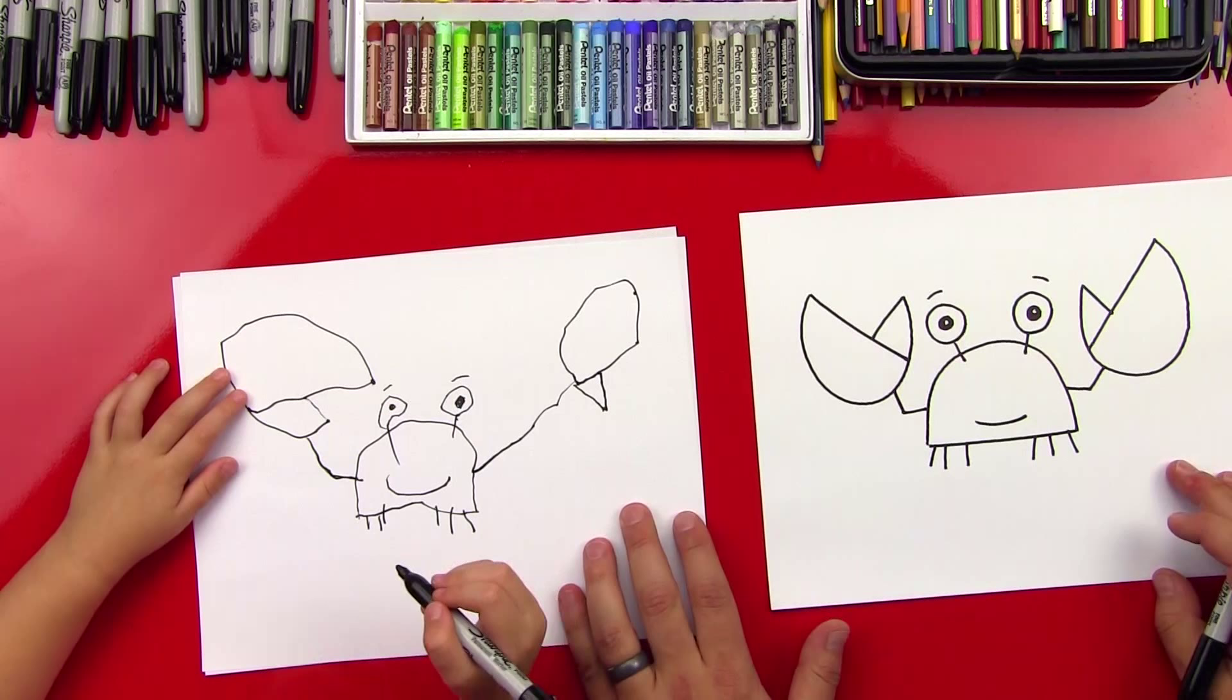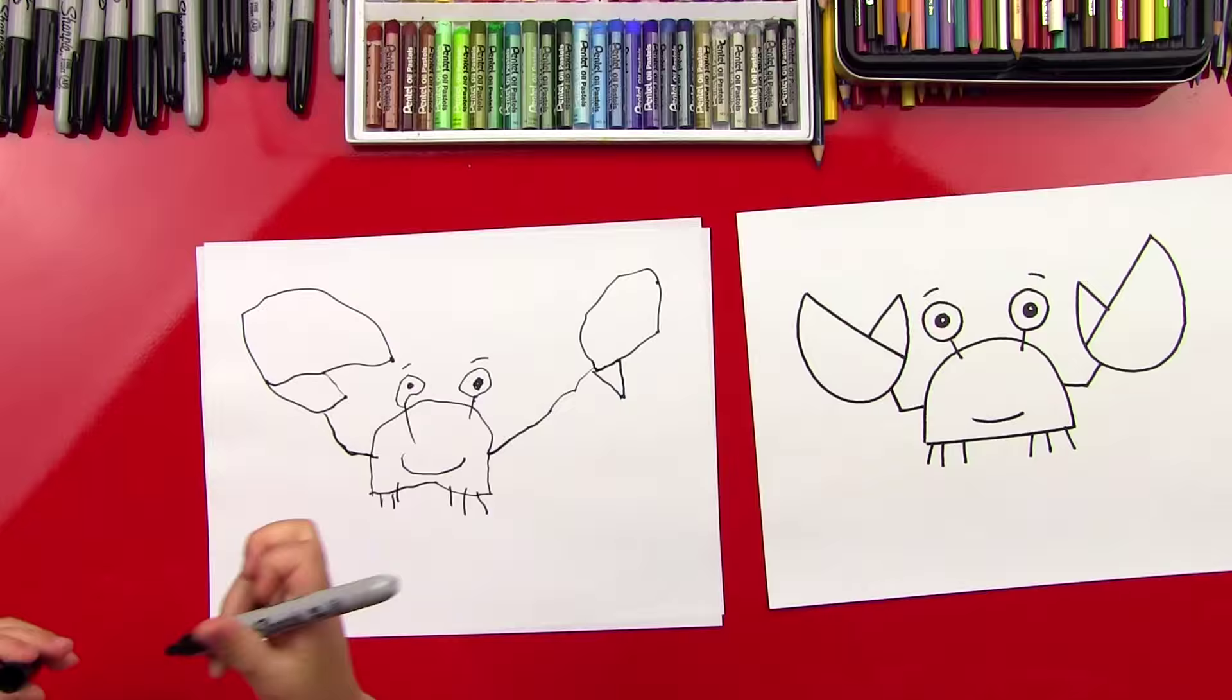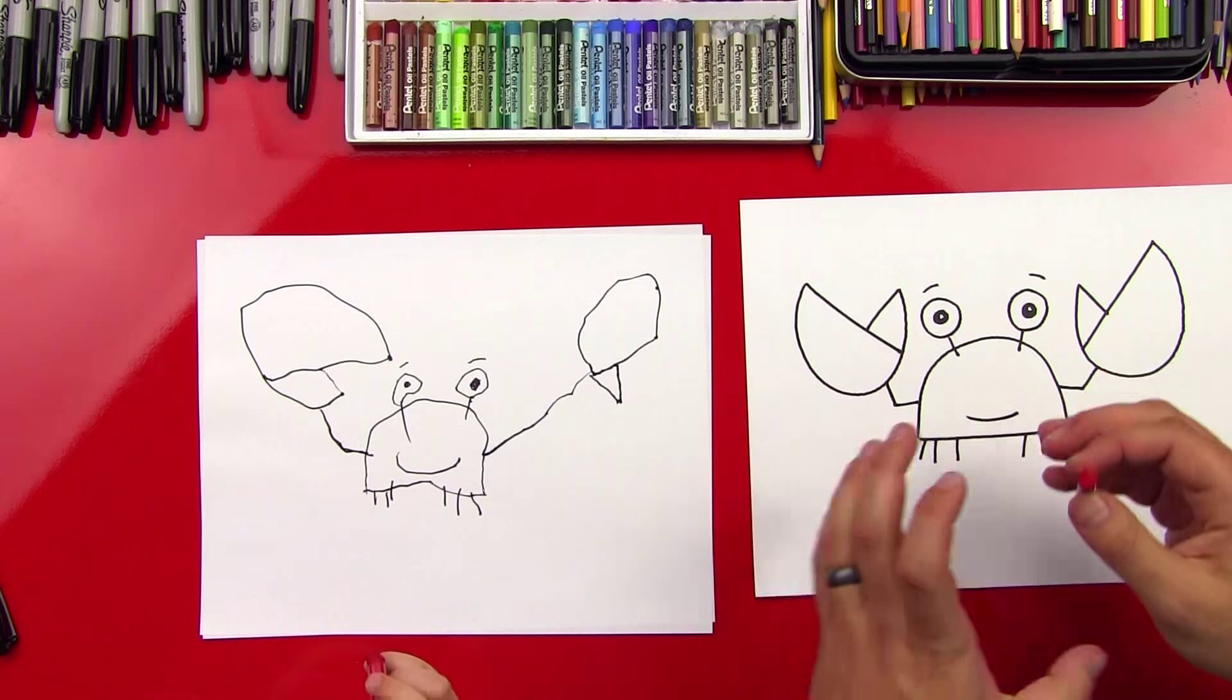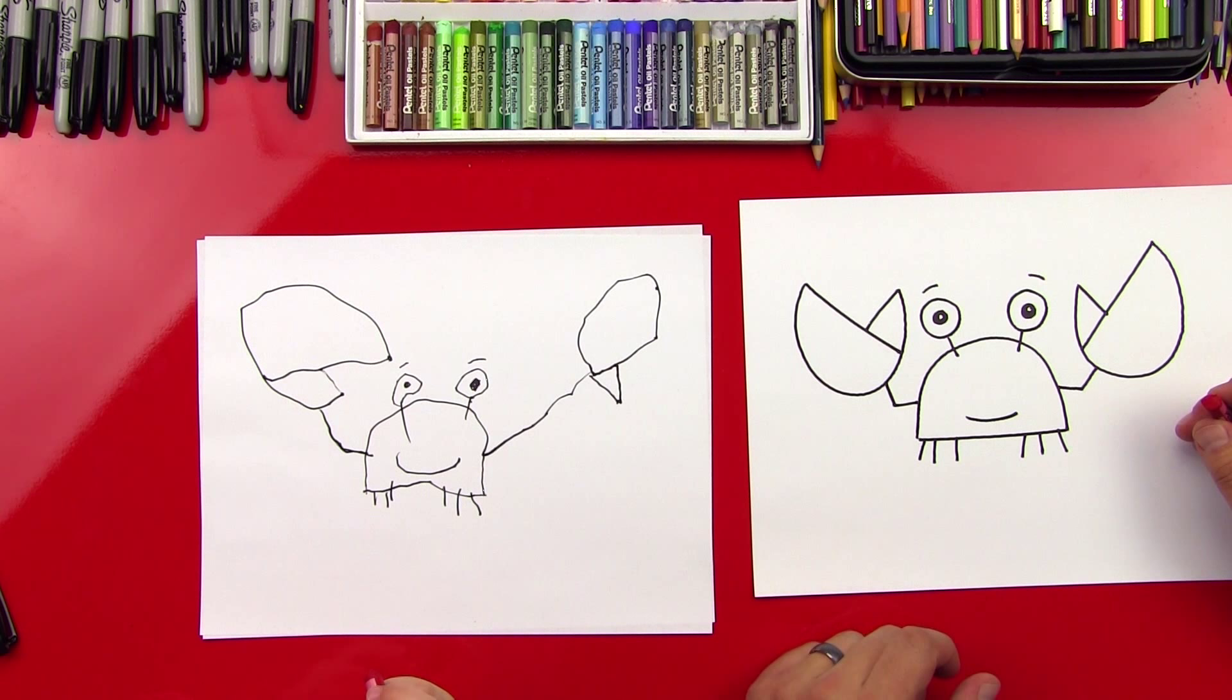Was that fun? Yeah. Should we color him? Yeah. Okay, let's get our red color. All right, Austin, we got our red color picked out, don't we? And we're gonna color the whole thing red except for his eyes, okay? His eyes, we're gonna leave white. Should we fast forward? Okay, let's do it.